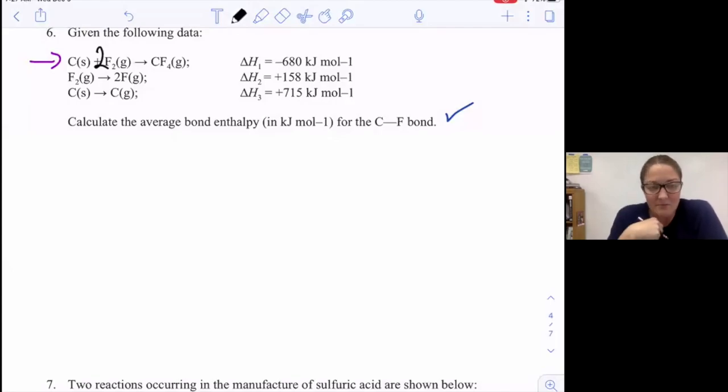Okay, I have another Hess's Law problem here. I'm going to calculate the average bond enthalpy for the C-F bond. I need to write an equation for this, for the breaking of C-F bonds. You can see in this structure here, those are the C-F bonds that we're going to be talking about breaking.